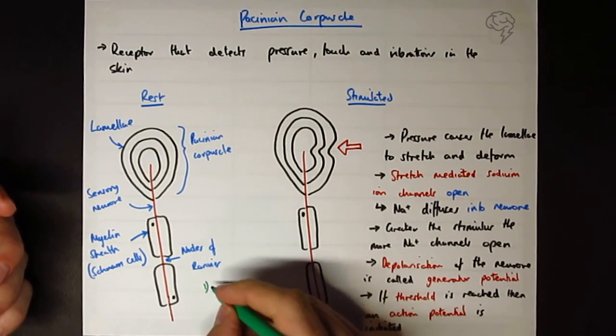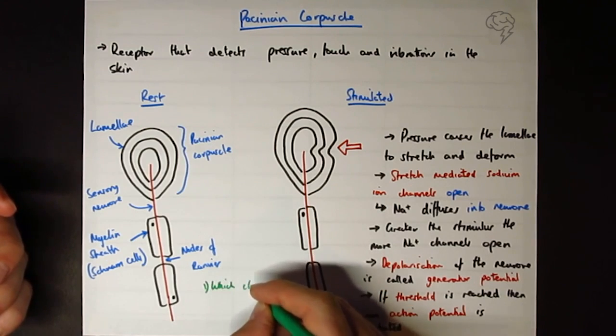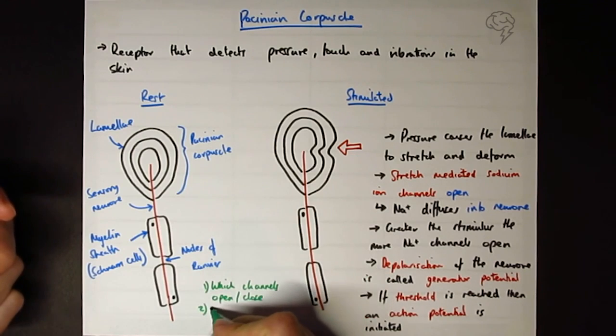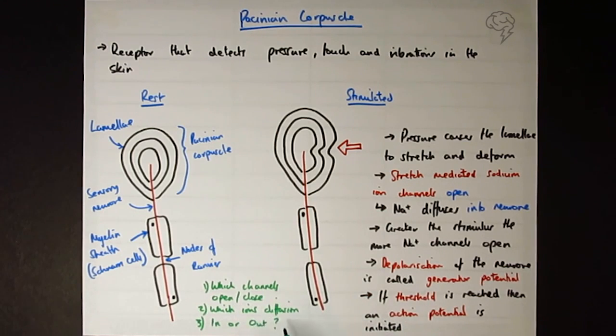So in general, we want the one, two, three: which channels open or close. Two, they always want to know which ions diffuse. It's always going to be diffusion unless it's the sodium-potassium pump, in which case obviously it's active transport. And they want to know which direction do they move, do they go in or out. So if you can include these three bits of information with your answers on neurons and receptors, then that is the detail of the information that they're looking for.